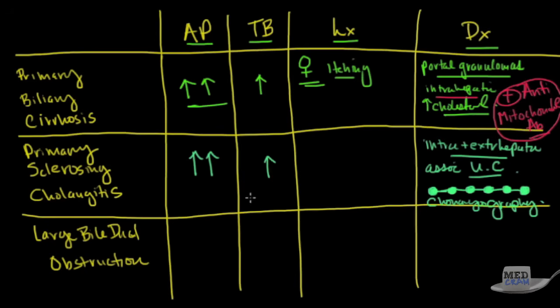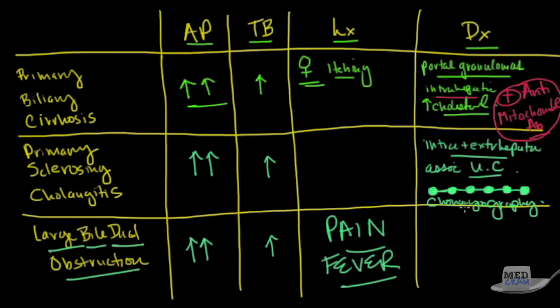Okay, what about large bile duct obstruction? Again, because ALKFOS is an inducible enzyme, you'll see that. You'll also see increased T-bili. Here, however, because you actually have a large bile duct obstruction, this is going to look like gallbladder disease or cholecystitis. You're going to get pain. You're going to get fever. Okay, these type of things.